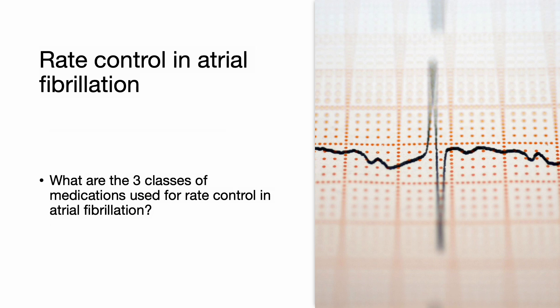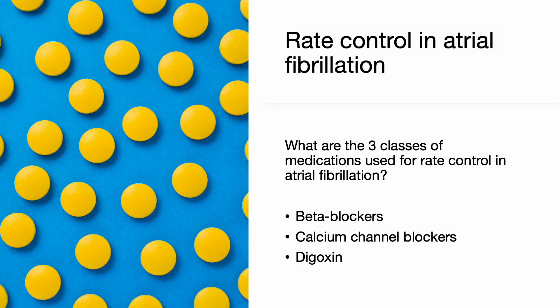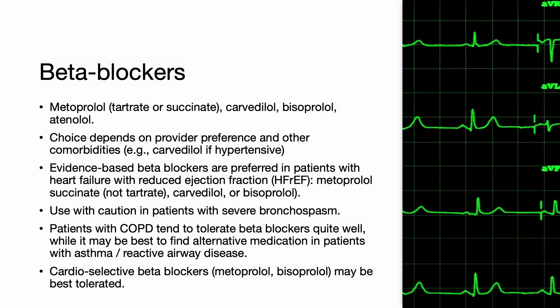What are the three classes of medications used for rate control in atrial fibrillation? They are beta blockers, calcium channel blockers, and digoxin. Beta blockers commonly used for rate control include metoprolol tartrate or succinate, carvedilol, bisoprolol, and atenolol. The choice depends on provider preference and other comorbidities.